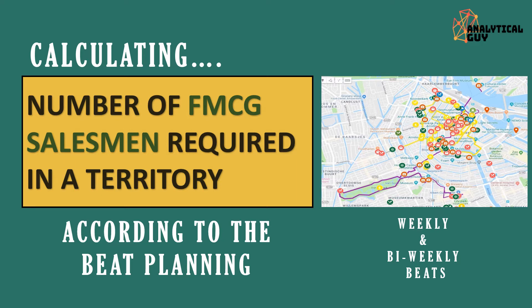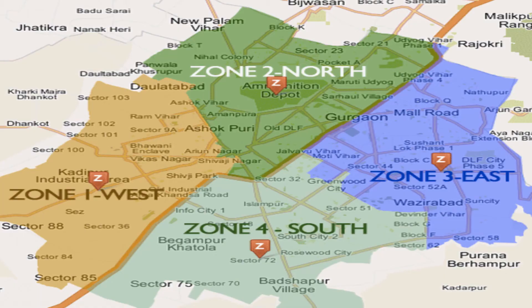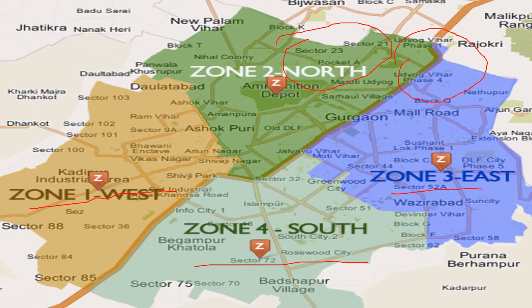We will talk about beat planning — it can be weekly planning or bi-weekly beats. Before that, let me talk about one particular territory: this is Gurgaon territory, divided into four divisions — Zone 1, Zone 2, Zone 3, and Zone 4. There can be various beats; for example, Sector 23/Sector 21 beat, Udyog Vihar beat, DLF City/Sushant Lok City beat, and Ashokpuri beat. There would be around 15 to 20 beats in this particular territory.